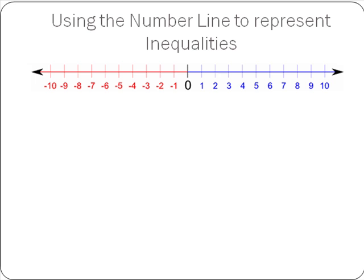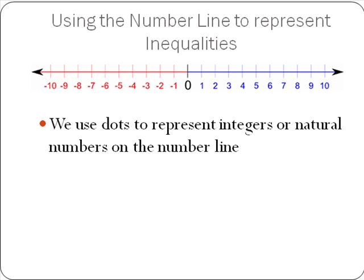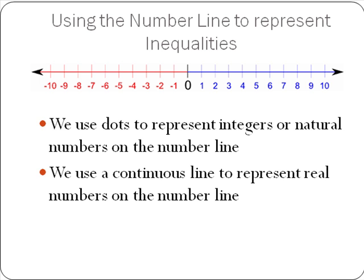There are certain things we need to remember when using number lines to represent inequalities. We use dots to represent integers or natural numbers on the number line, because there are no numbers in between that we need to include. However, we use a continuous line to represent real numbers, because there are an infinite amount of real numbers between any two numbers on our number line, so we need to include all of them.